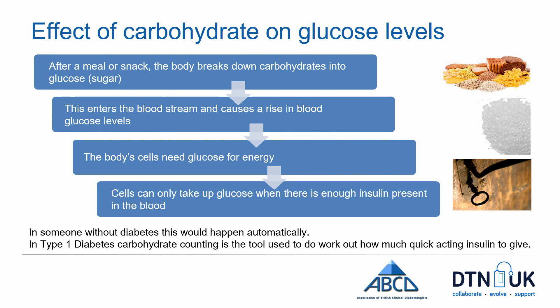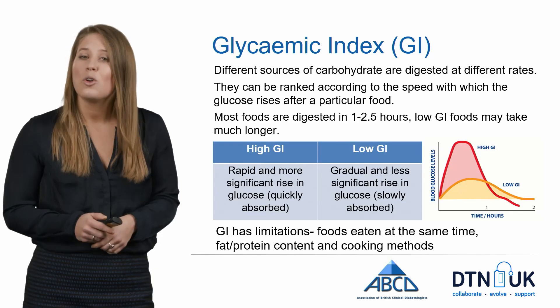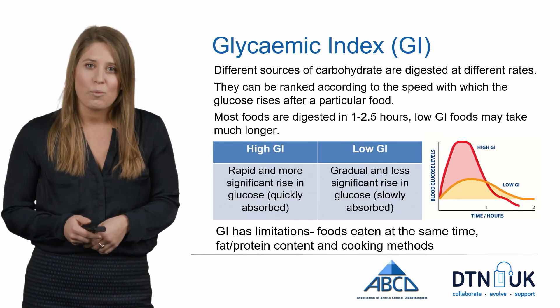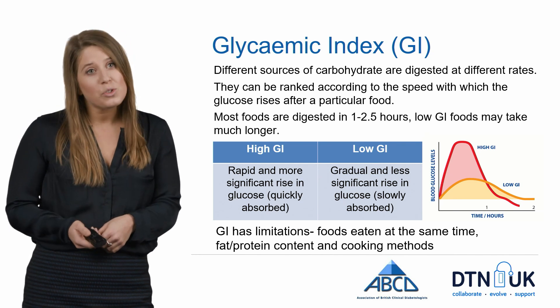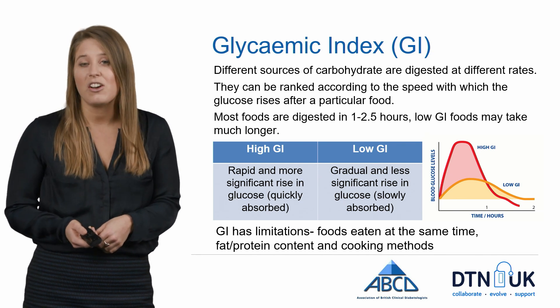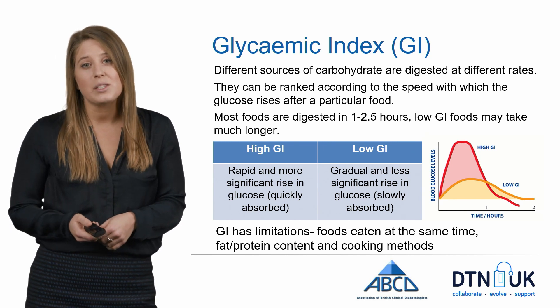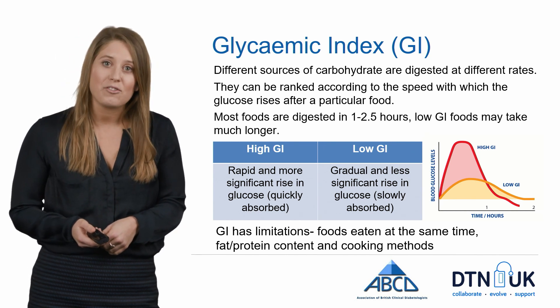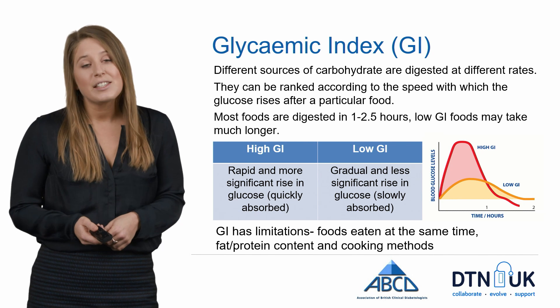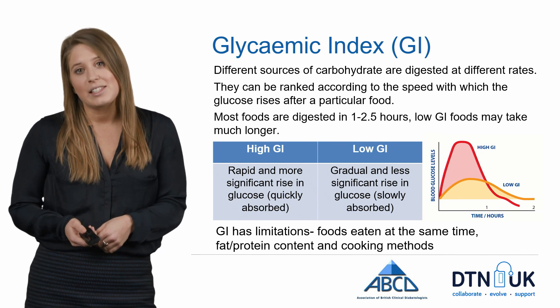The more carbohydrate you eat, the higher the rise in glucose levels, but it's not just the amount of carbohydrate that matters — it's also important to consider the type. Not all carbohydrates behave in the same way; different sources are digested at different rates. They can be ranked according to the speed with which glucose rises after a particular food. This is known as the glycemic index.